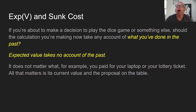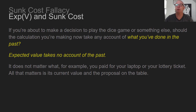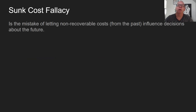Here's another new concept. If you're about to make a decision to play the dice game or something else, should the calculation take any account of what you've done in the past? The answer is: expected value takes no account of the past. It doesn't matter, for example, what you paid for your laptop or your lottery ticket. All that matters is its current value and the proposal on the table. This is the sunk cost fallacy — the mistake of letting non-recoverable costs from the past influence your decisions about the future.